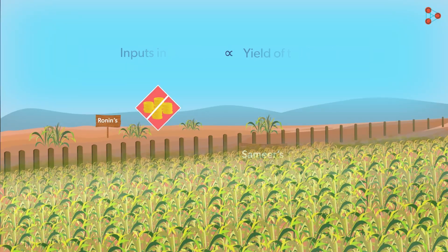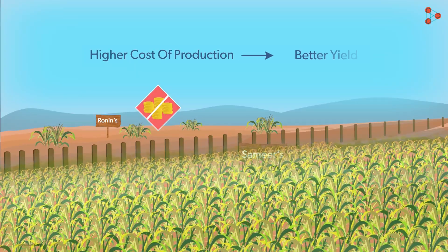Does higher the cost of production, better the yield?